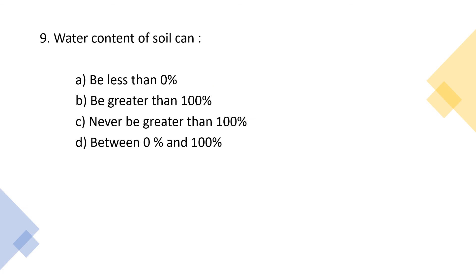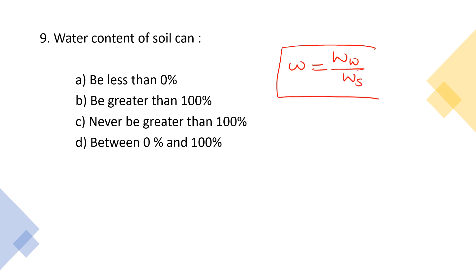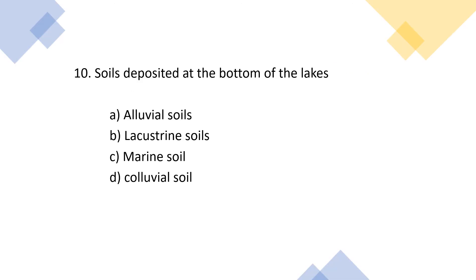Ninth question: water content of a soil can — A: be less than 0%, B: be greater than 100%, C: never be greater than 100%, D: be between 0 and 100%. Water content = weight of water / weight of solids. This ratio can exceed 100%, so the answer is option B.